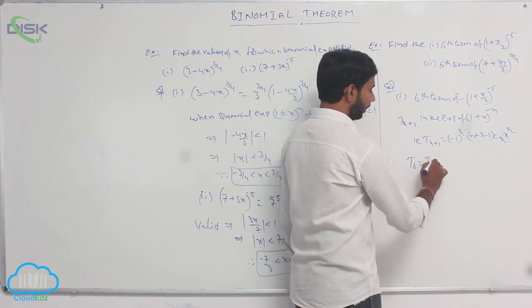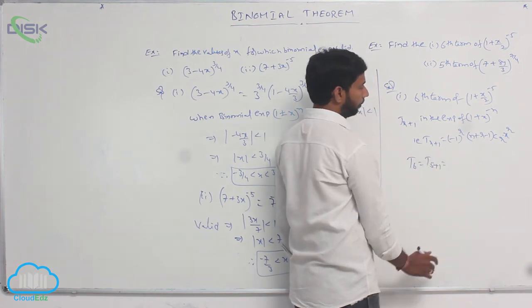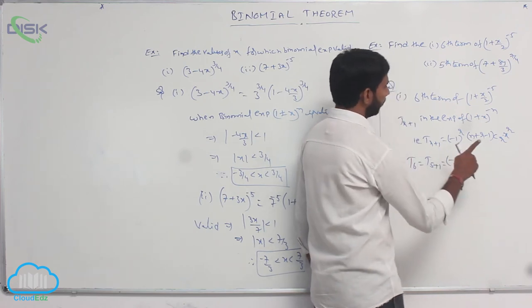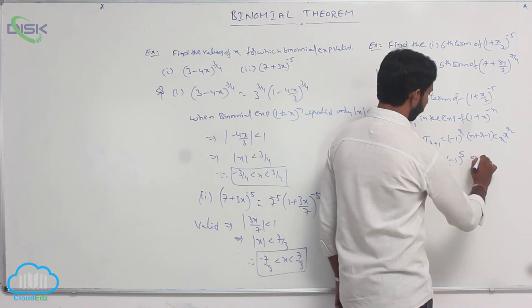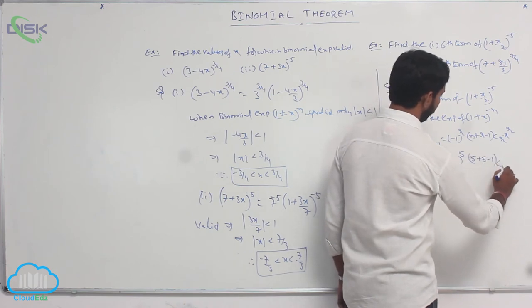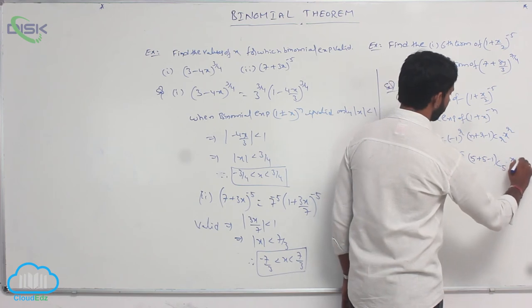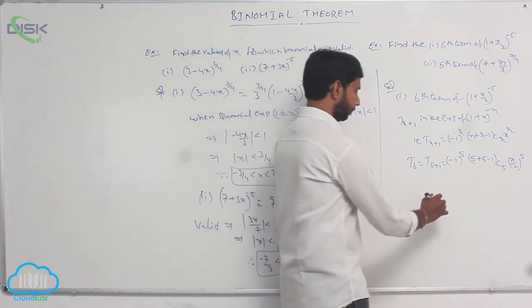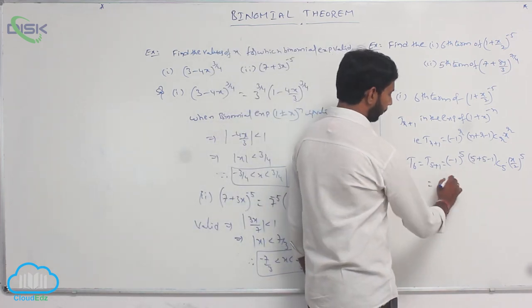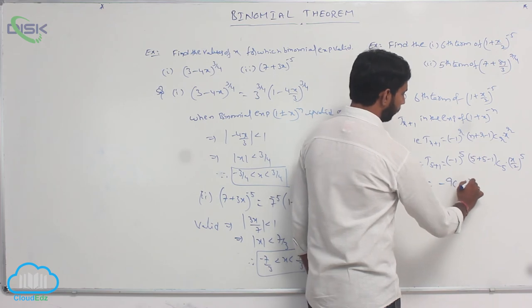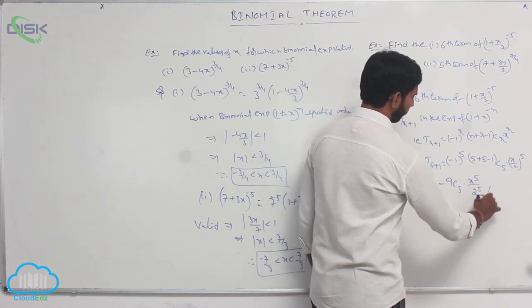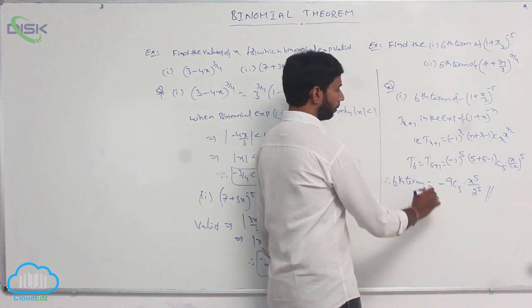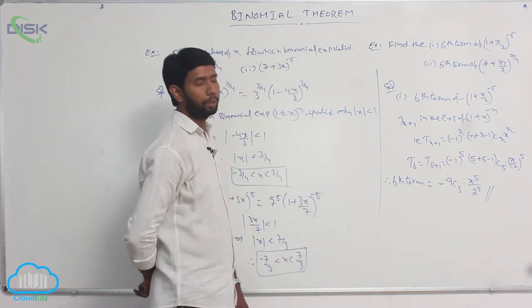T6 equals T(5+1). Here r = 5 and n = 5, so this equals (−1)^5 into C(5+5−1, 5) into (x/2)^5, which gives −9C5 into x^5 / 2^5. Therefore, the sixth term equals −9C5 · x^5 / 32.